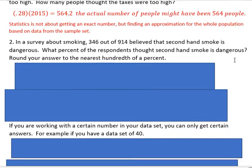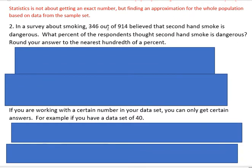In the second example, it says in a survey about smoking, 346 out of 914 people believe that secondhand smoke is dangerous. What percent of the respondents thought secondhand smoke is dangerous? Round your answer to the nearest hundredth of a percent. To get that percent, you would take the number of people who thought it was dangerous and divide by the total number of people in your sample.